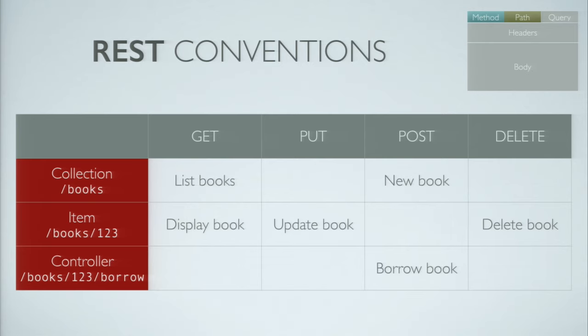Those are all the CRUD — create, update, read, delete — operations. But oftentimes we need to issue more specific instructions to our API, and for that we can use a controller, which can have an address like book ID slash borrow, allowing us to, for example, borrow a book from a library.